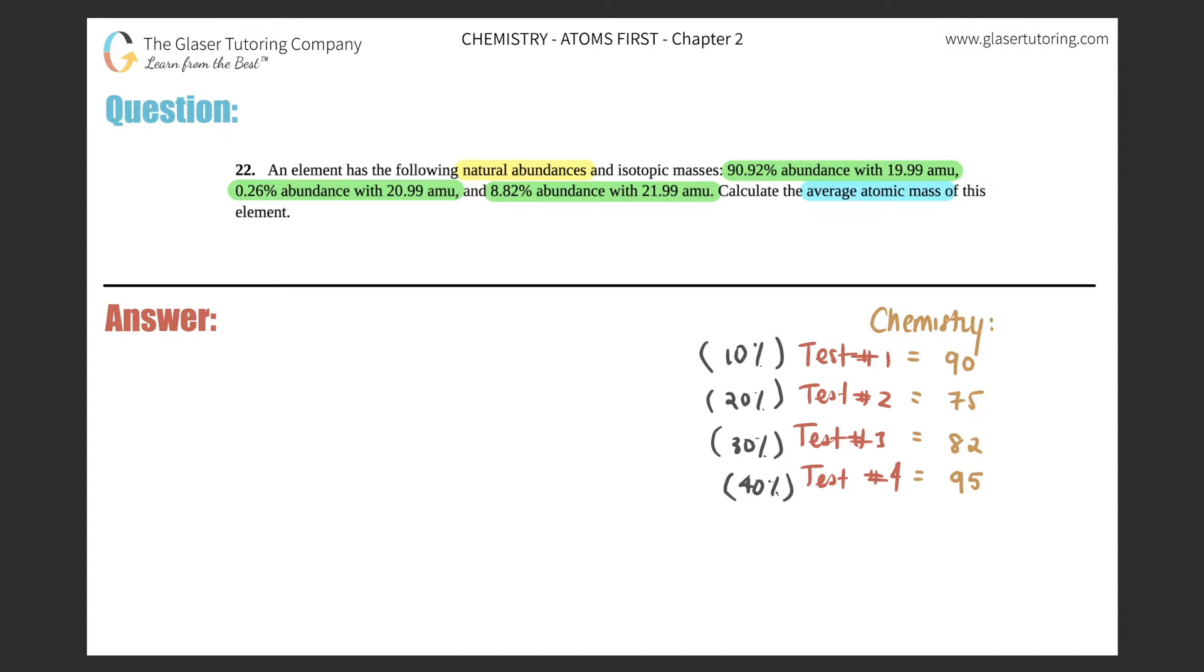What would be our overall grade? Well, what we always do is the first thing is that you have to take these percentages out of their percentage form and put them into a decimal form. So just know that if you're working with a percentage and you want to get to its decimal equivalent, all you got to do is just divide by 100. And if you want to go backwards from its decimal equivalent, you all you got to do is times by 100.